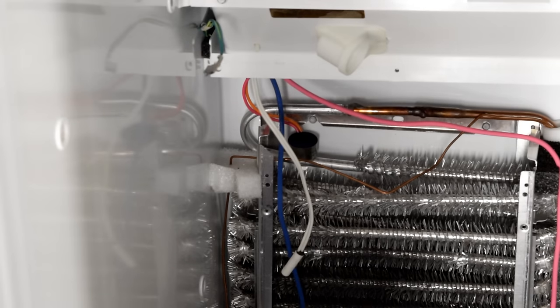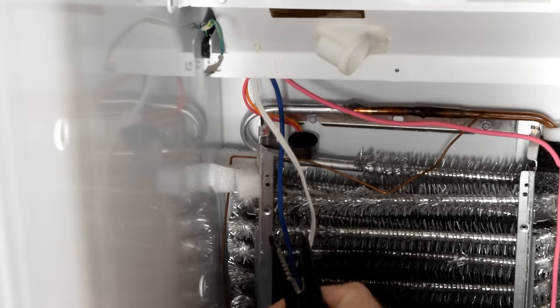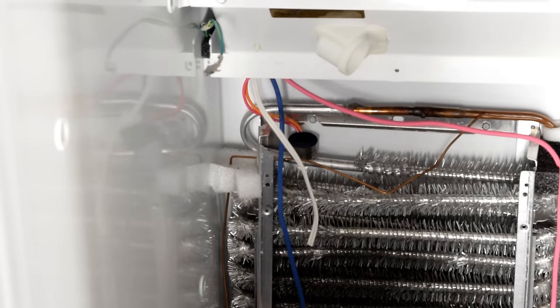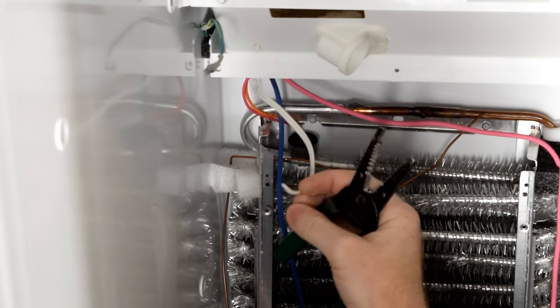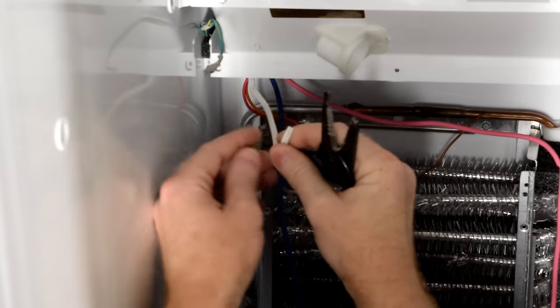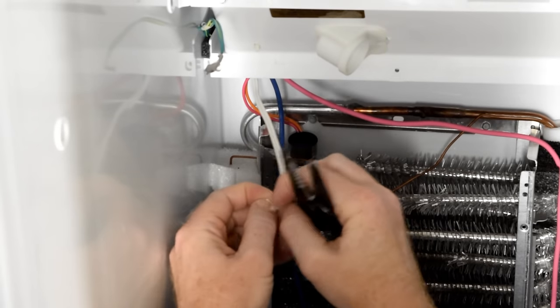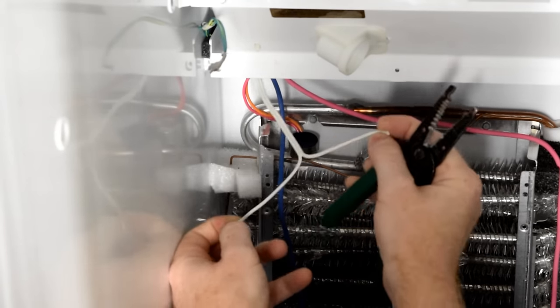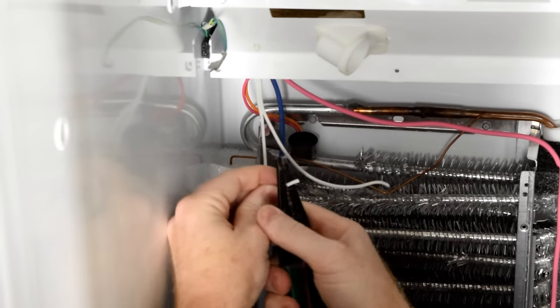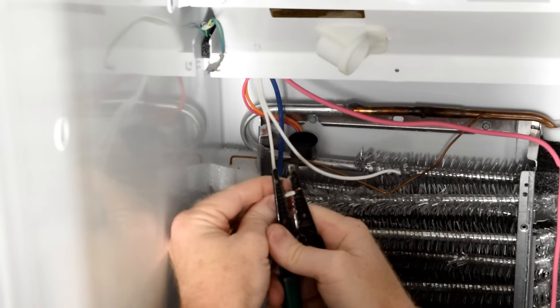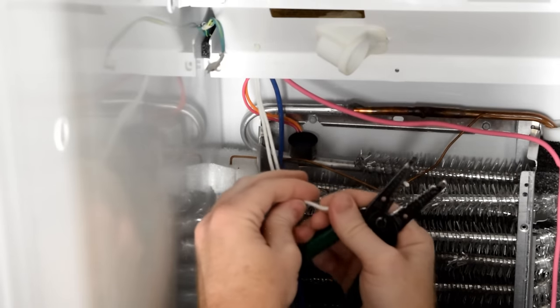Once the sensor is off the evaporator, take your wire cutters. If you still need to test the sensor, give yourself some slack to do that. This one's trash, so we're just going to go ahead and give ourselves as much slack as we can. Using your fingers, just go ahead and separate these two wires so you can strip them back. Strip off about a half an inch.